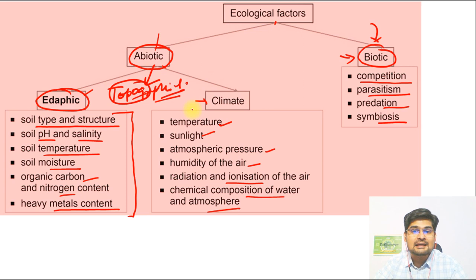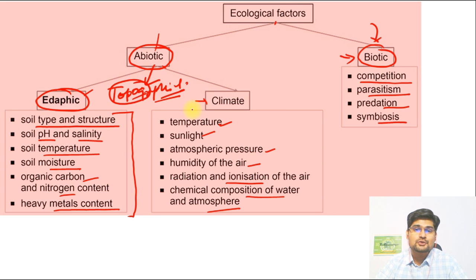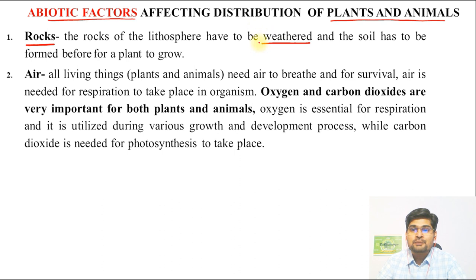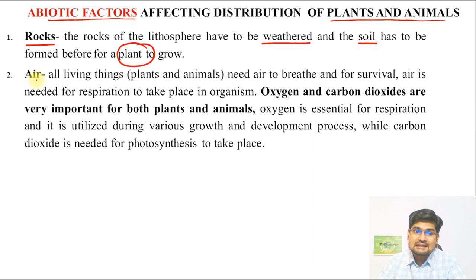Let's elaborate the factors one by one. For abiotic factors, the first important point is rocks. Rocks are the parent material from which soil is derived through the process of weathering. This is covered in detail in the geomorphology playlist. Soil develops from rock weathering, and in that soil grow plants — showing how abiotic factors relate to biotic factor growth.